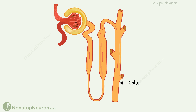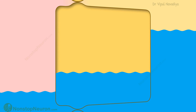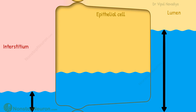The main site for this action is the collecting duct in the kidney. So let's zoom into it. This is an epithelial cell, this is the interstitium, and this is the lumen of the collecting duct. The interstitium is hyperosmolar — in simple words, water concentration is low in the interstitium as compared to that in the lumen.